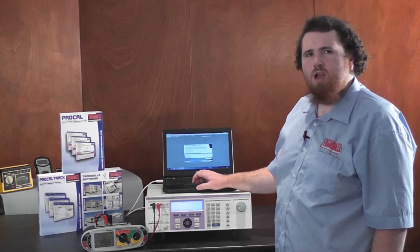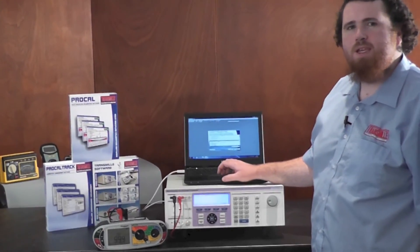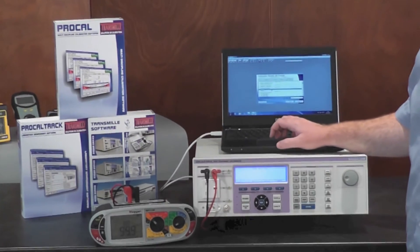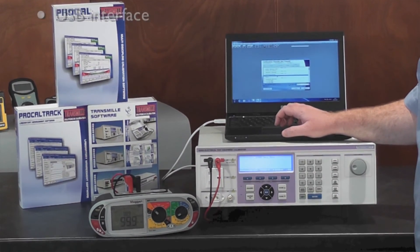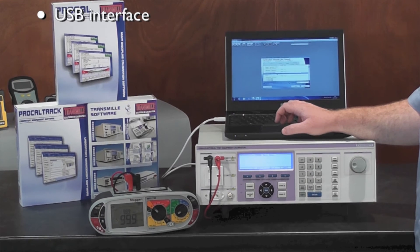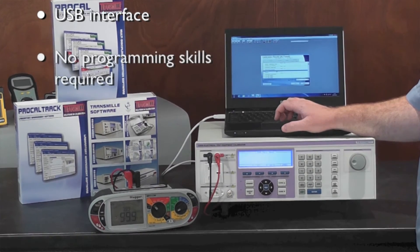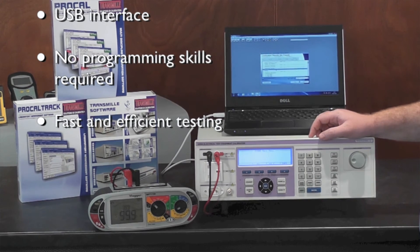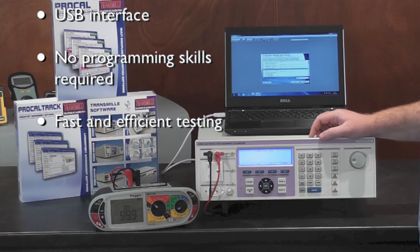The Transmil 3200A comes fitted with a USB interface as standard, enabling fast and easy connection to a computer. When connected to a computer running our ProCal software, procedures can be written that automatically control the 3200A, enabling fast calibration of testers.